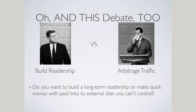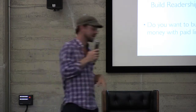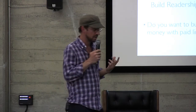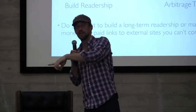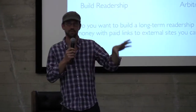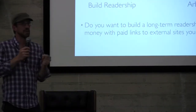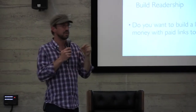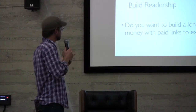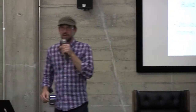And then there's this final debate — and this one is a little loaded, so you can see which side I'm on. There is the build-readership idea, or there is arbitrage traffic. By that I mean, you've all seen related link modules at the bottom of stories where half or all of those are links to other people's sites that you get paid a couple of pennies for including. The biggest ones are Outbrain and Taboola. So the question is: for your site and your goals, do you try to get people to stick around and build loyal readership? Or are you a publisher that wants to make quick money with paid links to external sites you can't control? I'm not a fan of this model.